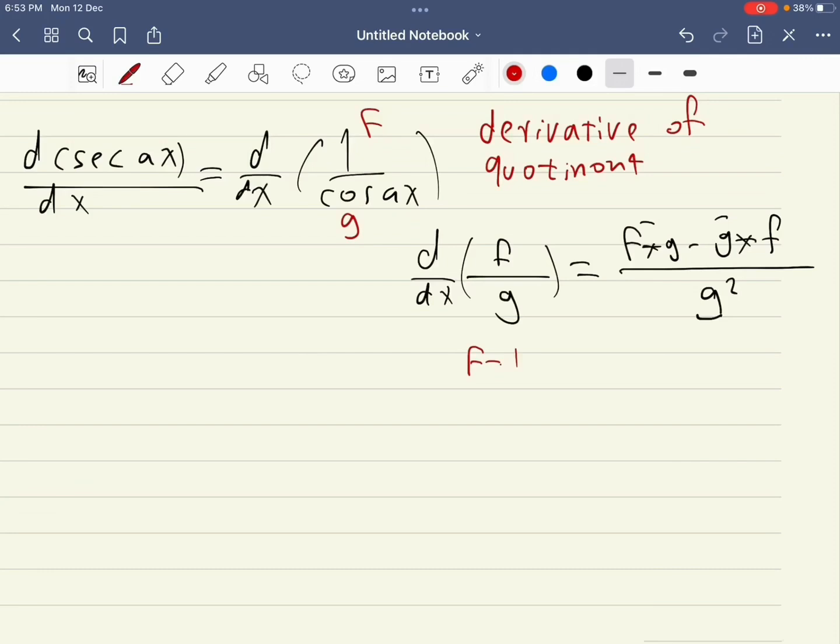So f equals one, f prime equals zero, g equals cosine ax, g prime equals minus a sine ax. Now we have to apply this rule to find the derivative of secant of ax.